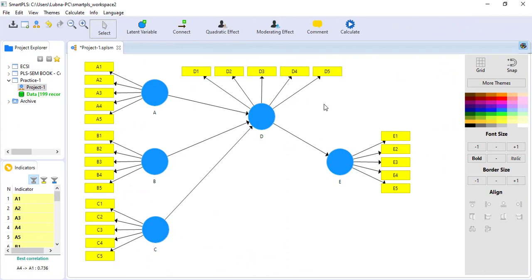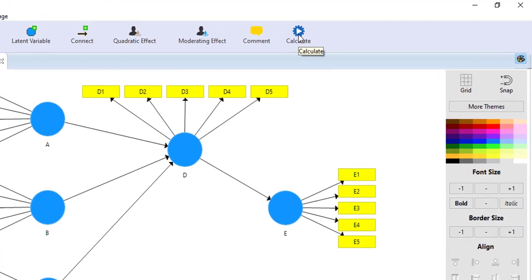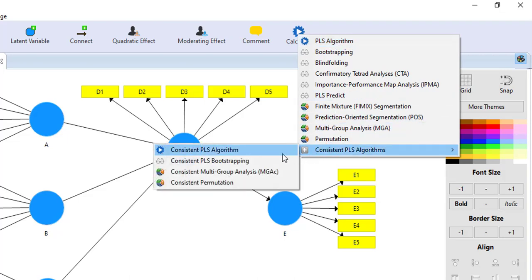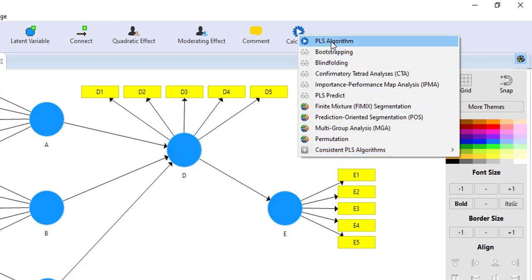Okay, so I have already drawn the model and I am ready to go for analysis. For testing measurement model we can go to calculate and here you can see there are different options. There is one option PLS algorithm and the other option is consistent PLS algorithm.